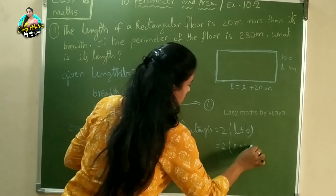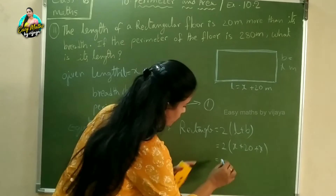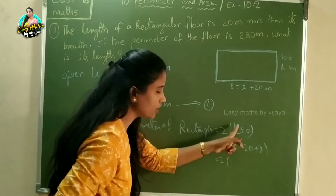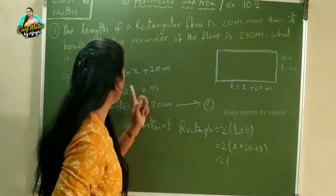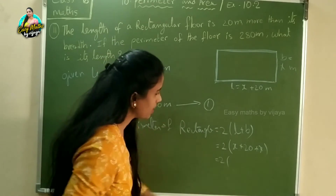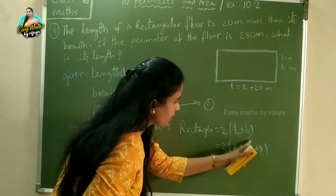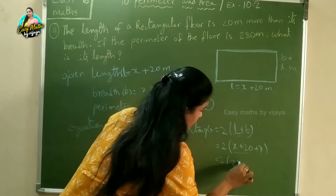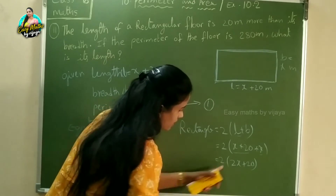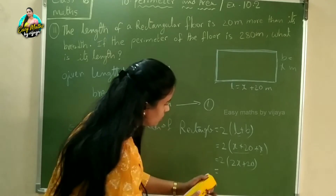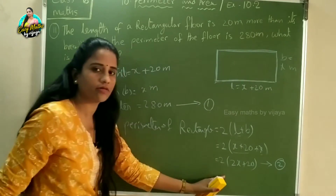Now substitute the values of L and B. Perimeter = 2 into (x + 20 + x), which gives 2 into (2x + 20). So the perimeter equation becomes 2(2x + 20).